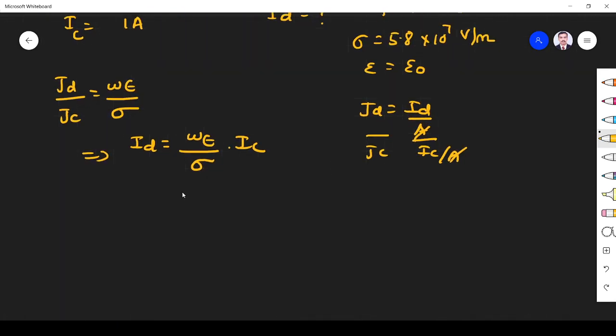Substitute the values: ω = 2πf, where f = 10^8. ε = ε₀ = 8.854×10^-12, divided by σ = 5.8×10^7. If you simplify that, what is Id?